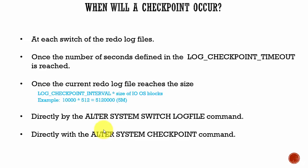When will a checkpoint occur? A checkpoint can occur in one of five scenarios. The first scenario is at each switch of the redo log files. There are multiple redo log files in the Oracle database, and when the Oracle instance is moving from one redo log file to another, before moving it will trigger the checkpoint.